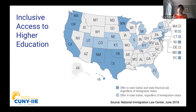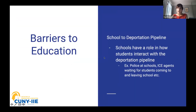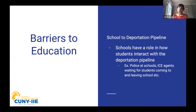Neither K-12 nor higher ed functions within a bubble — there are external implications that impact undocumented students' ability to be successful. One of those is deportation proceedings and how the school-to-deportation pipeline ultimately impacts undocumented students. When we look at the school-to-deportation pipeline, we see that schools have a role in how students interact with it. For example, if you have police stationed in your school, that often means students are in danger of interacting with the deportation pipeline because of their presence.